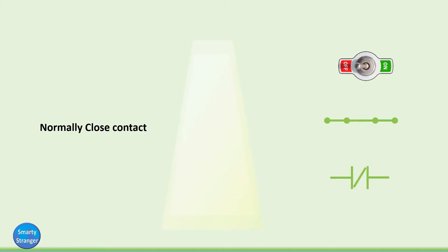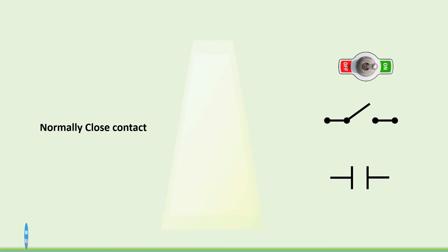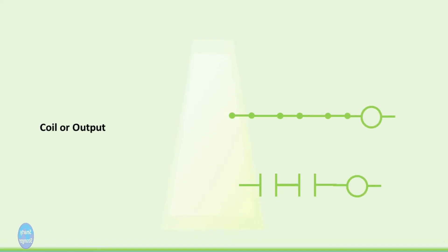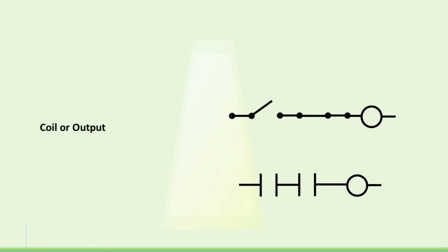The second symbol is the normally closed contact. Normally closed contact is like a closed switch. When its corresponding physical input is energized or high, the normally closed contact becomes an open contact. When the input is de-energized or low, it becomes closed again. Third is the coil or output. When all contacts in a rung fulfill the requirement, their related coil is energized. If any contact does not fulfill the requirement, the coil will not be energized.